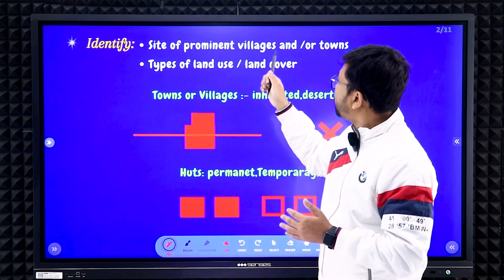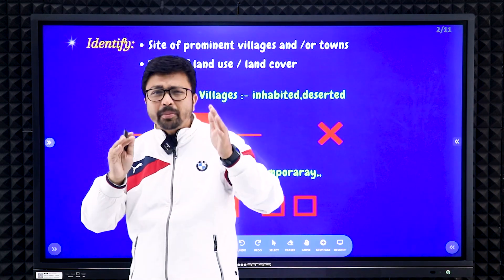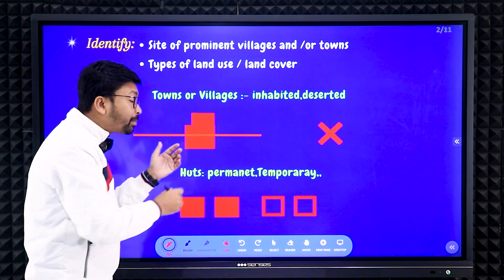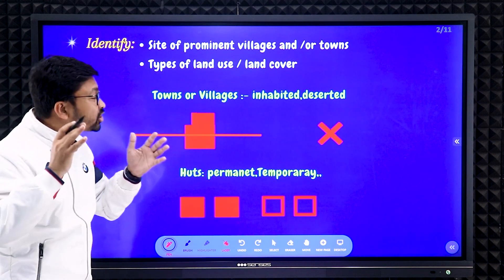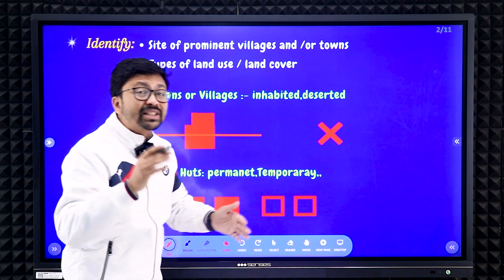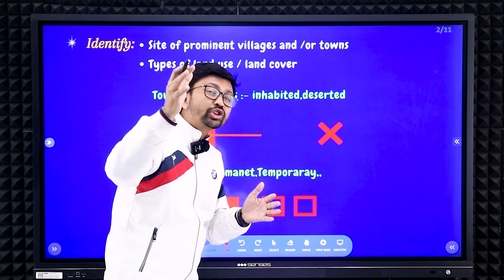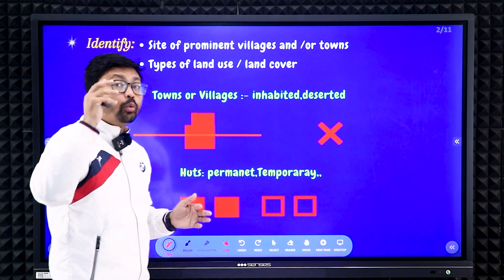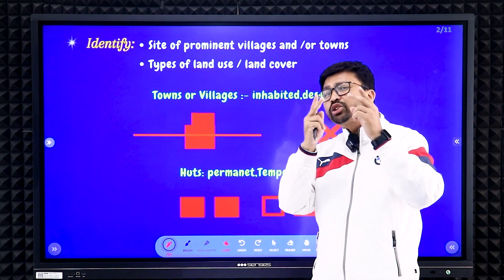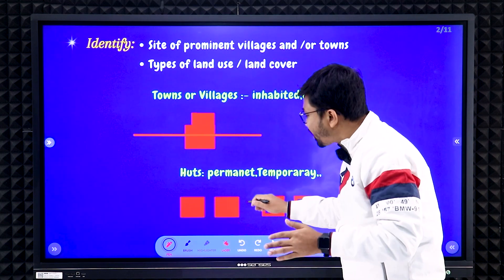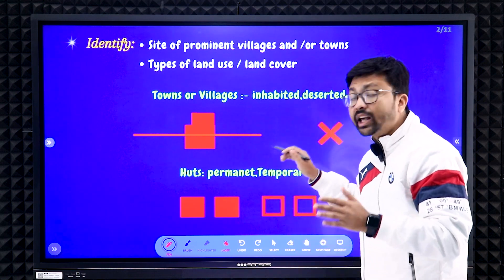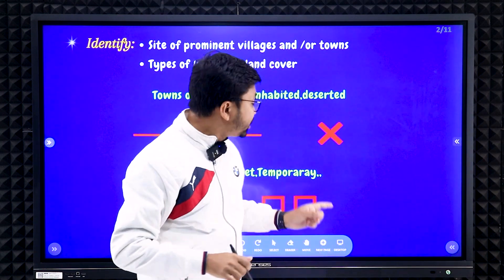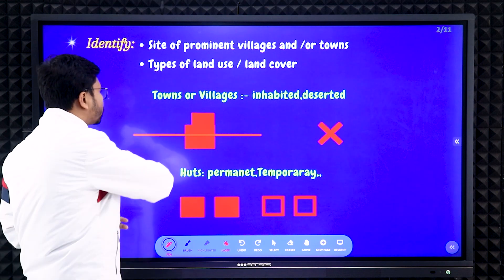First, here you will see the identification of permanent villages and towns. Village settlements will be shown with red color boxes. If you see red color boxes, those are permanent villages or settlements. If you see cross marks, those are deserted places where people used to stay before but no one stays now. The red rectangle filled with red color means permanent houses; an unfilled red box means temporary houses.